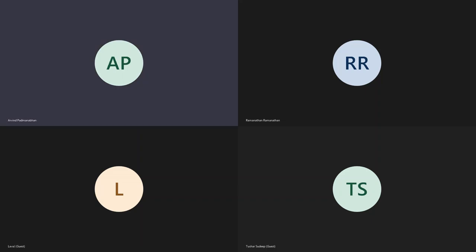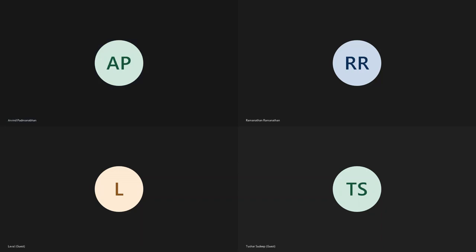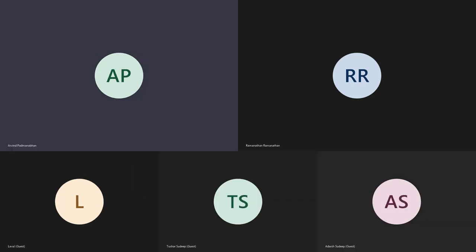Welcome everyone to this session on an introduction to GIMP. Some of you have attended our Tuesday session on draw.io. How is GIMP different from draw.io? The main difference is that draw.io allows us to create vector illustrations, whereas today we are going to see software that allows us to edit images at a very low level — at the level of pixels, not at a higher level of abstraction like draw.io. That is what GIMP is all about.